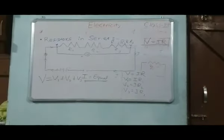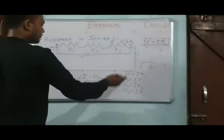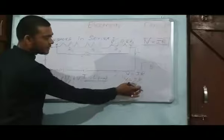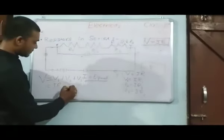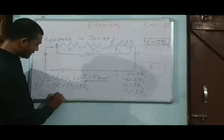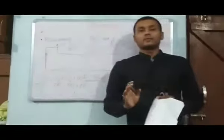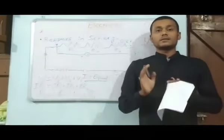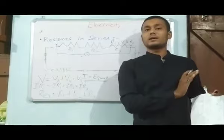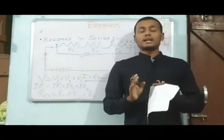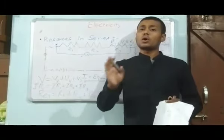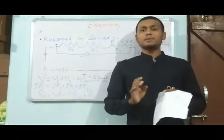The equivalent potential difference is obtained by the summation V1 plus V2 plus V3, which gives IR1 plus IR2 plus IR3. Since V equals IR, I cancels out and R equivalent equals R1 plus R2 plus R3. So whenever resistors are placed in series combination in an electric circuit, the equivalent resistance is equal to the summation of all resistors placed in the circuit.